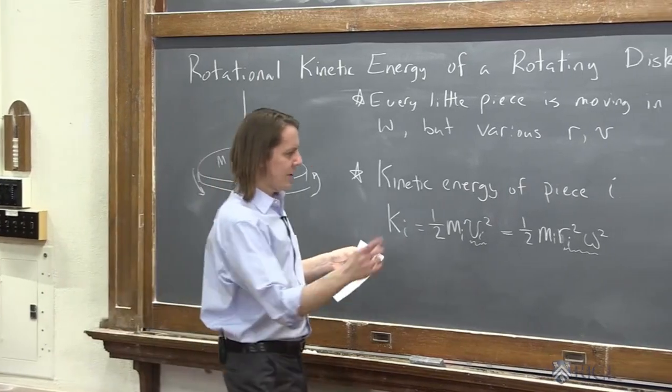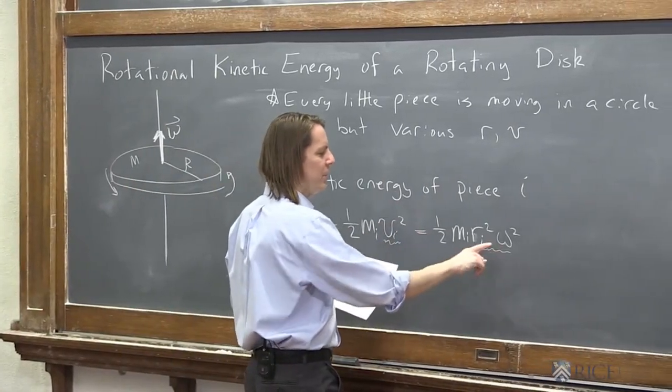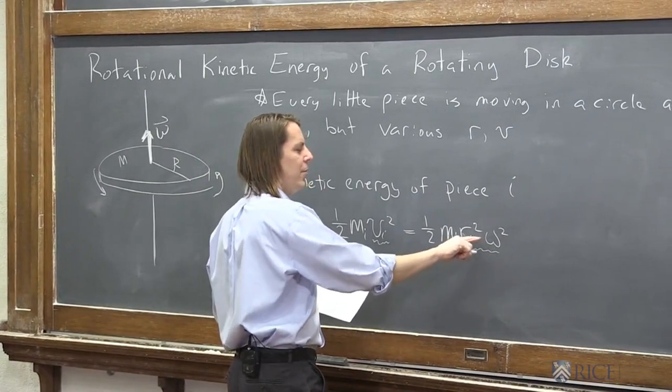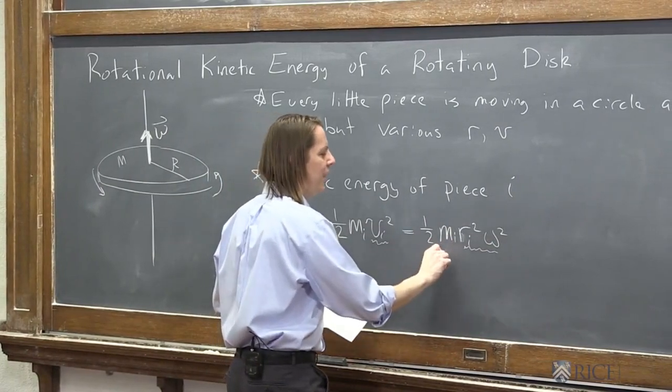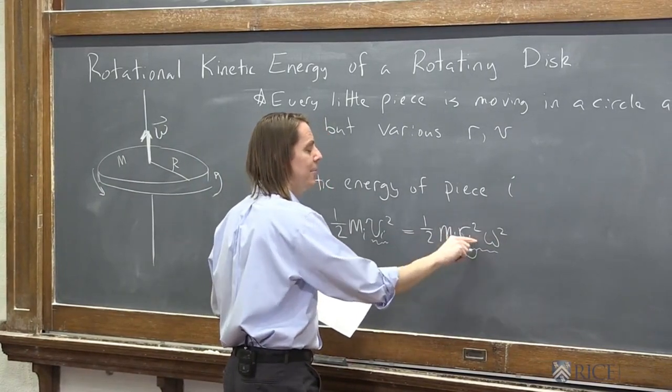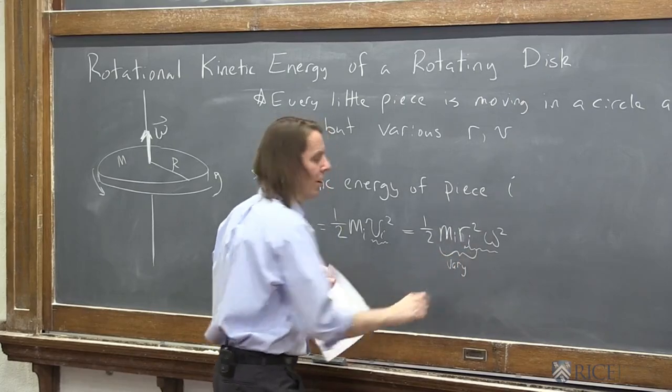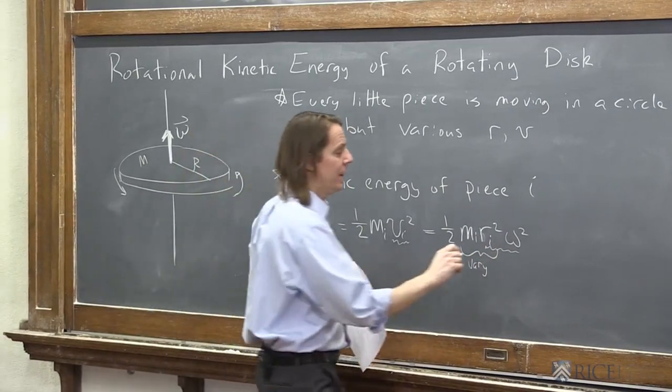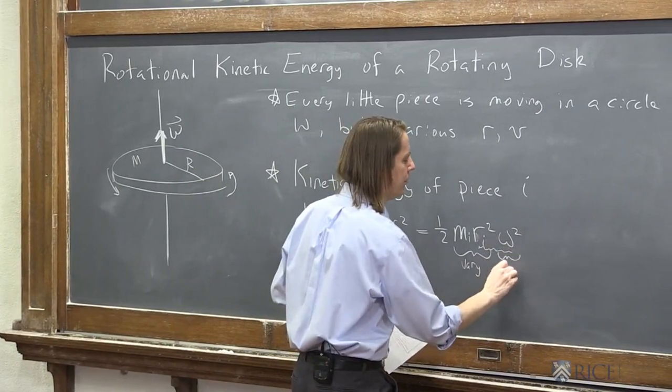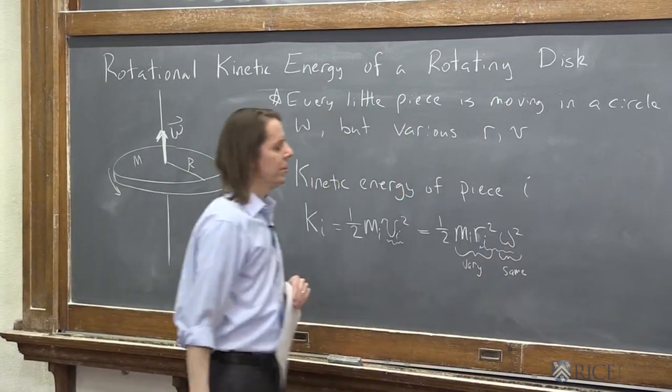So here we have the case. Let's think about what varies and what's the same. So the r and omega came from the v, but the m_i and the r_i vary. Wherever you put that piece of tape, those two are different, and omega is the same everywhere you go.